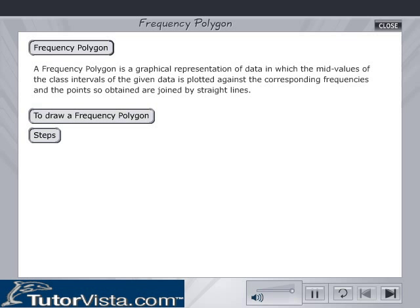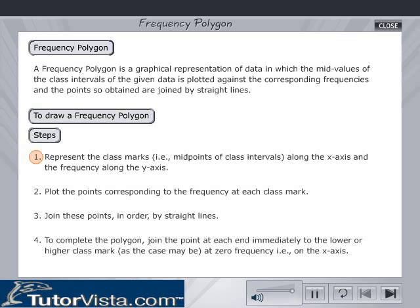Follow these steps to draw a frequency polygon. Represent the class marks, i.e., mid-points of class intervals, along the x-axis and the frequency along the y-axis. Plot the points corresponding to the frequency at each class mark.